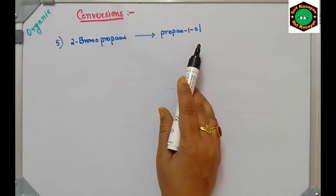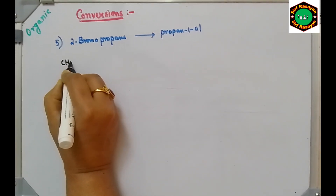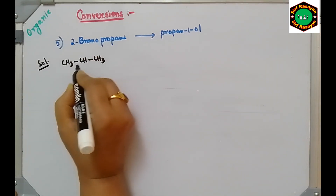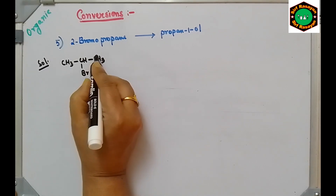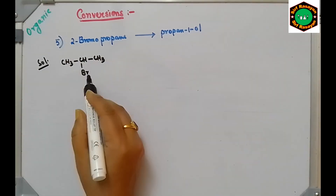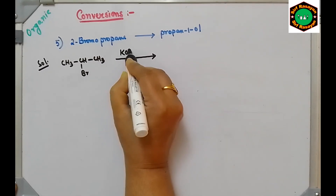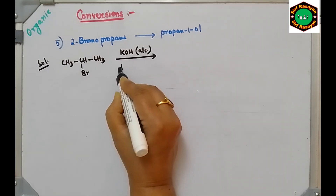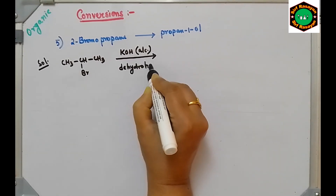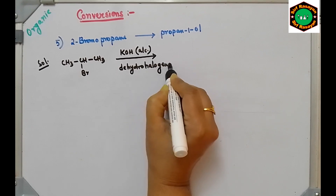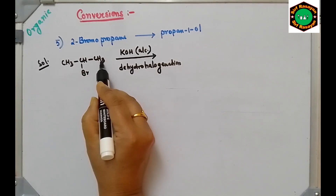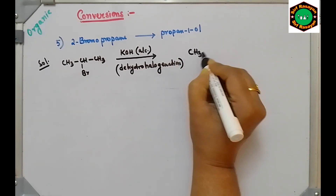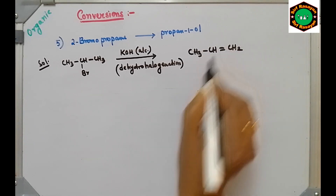Next conversion: from 2-bromopropane we have to synthesize propan-1-ol. 2-bromopropane has 3 carbon atoms with Br at C2. Treat this with alcoholic KOH — dehydrohalogenation will take place. One hydrogen and one Br will be removed, giving CH3-CH=CH2, which is propene.